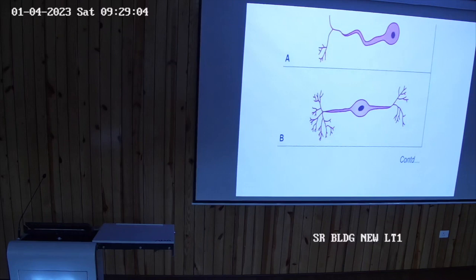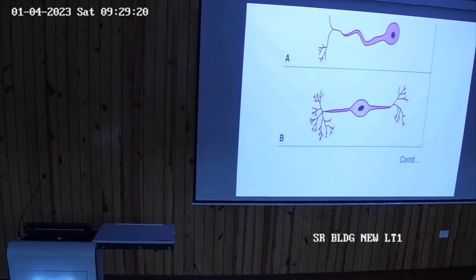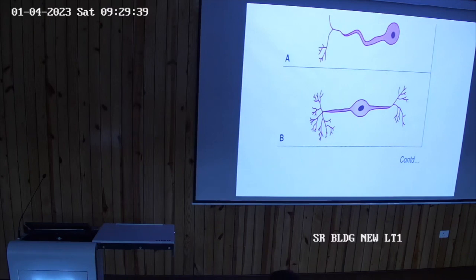Now the classification of neurons. We classify neurons on different bases. First is on the basis of number of processes. The axon is always one in number. The first type is the unipolar neuron, which has one process. That one process acts as both dendrite and axon.